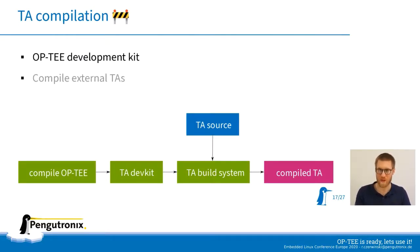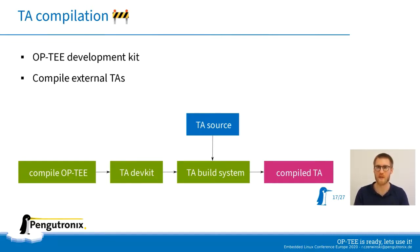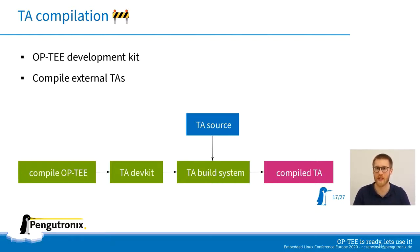When OP-TEE is compiled it produces a dev kit (development kit) which can be used to compile external trusted applications. This was used with the Microsoft firmware TPM, which is unlikely to be included in the OP-TEE project itself. You compile OP-TEE to produce the TA development kit, then combine your TA sources with the dev kit and its build system to compile a trusted application for your specific OP-TEE version. The OP-TEE interfaces are fairly stable, so TAs compiled with older dev kits should run on newer OP-TEE environments.